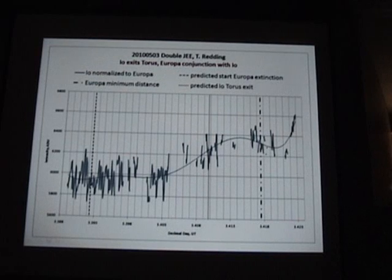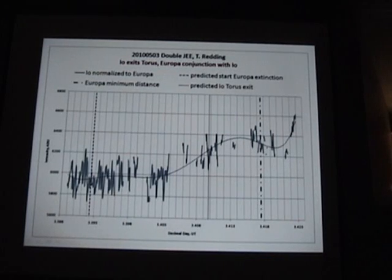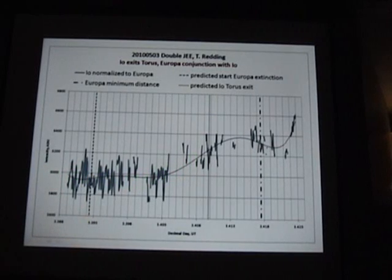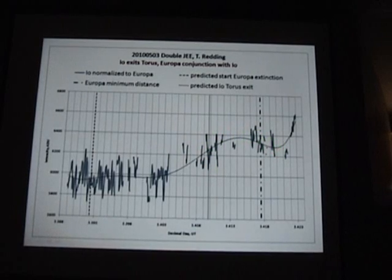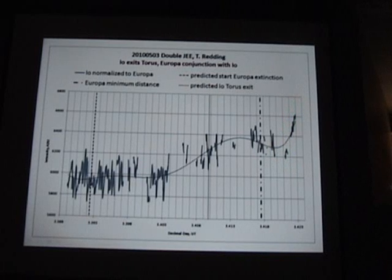And here is a complex one: Io exiting its tip, starting to brighten. Then Europa passes in front of it, giving a secondary dimming. As Europa whizzes past, Io tries to return to its nominal brightness.